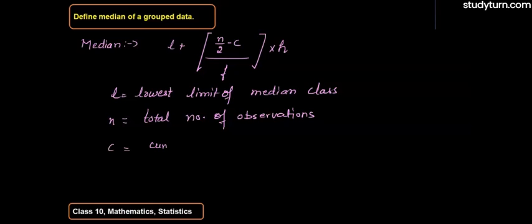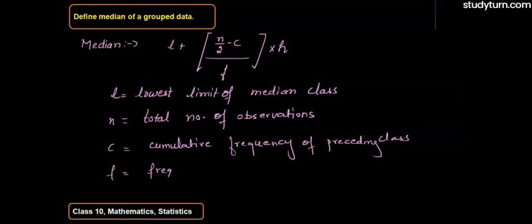c is the cumulative frequency of the preceding class. And f is the frequency of each class, and h is the class size.